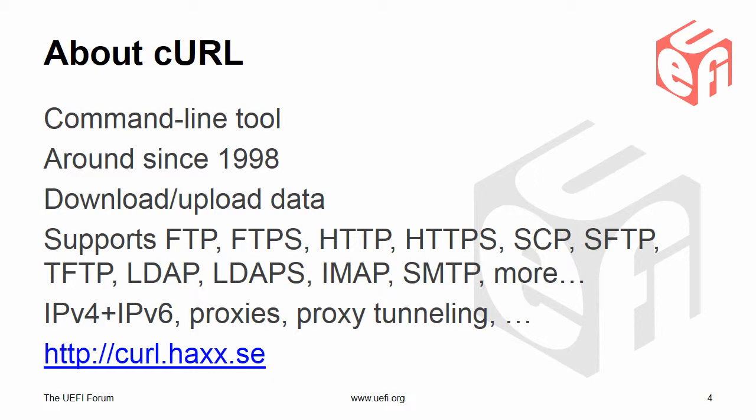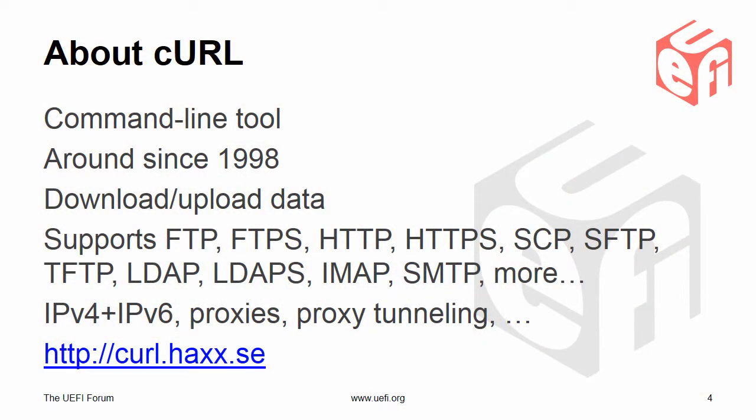Curl is a command line tool that's been around for over 15 years. It lets you do both uploads and downloads. It's the less famous equivalent to wget, but actually more capable than wget in many ways. It supports quite a few transfer mechanisms, including secure ones. HTTP and FTP are the big ones, but it'll also send and receive email and so on. It's compatible with both IPv4 and IPv6, can deal with proxies and complex network topologies. The URL for the open source project, which is hosted in Sweden, is on screen.